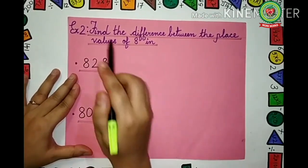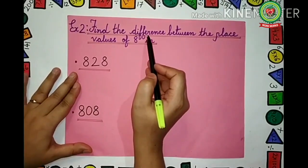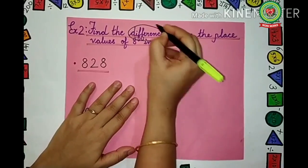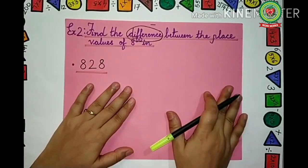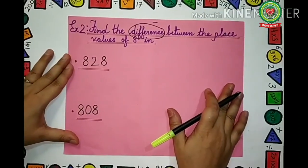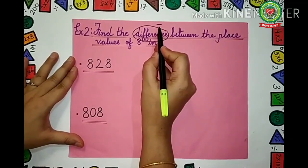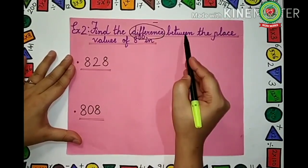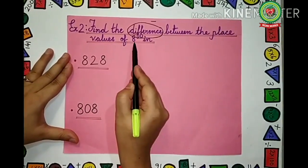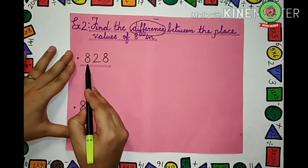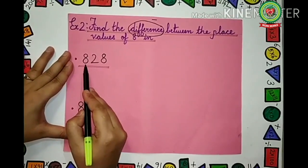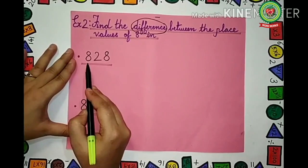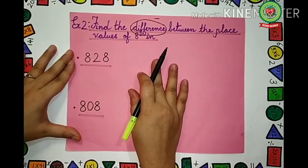Again read the question: Find the difference. Students, difference means minus. Whenever difference is written in any question, that means we have to minus the numbers. They have told: find the difference between the place values of 8 in this number. First we have to find the place value of 8. For that, we have to write the place value table starting from the right-hand side: 1's, 10's, 100's.